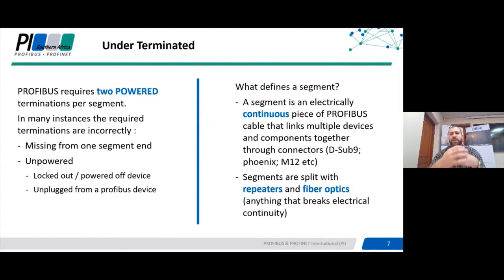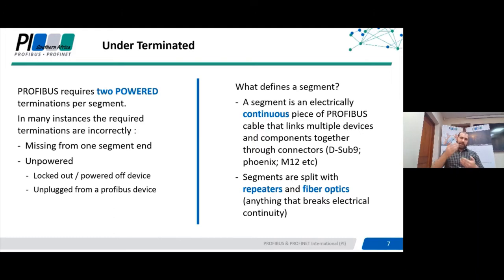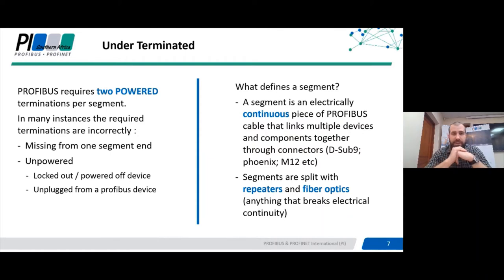One of the most common faults for Profibus DP installations is referred to as under-termination. To understand this, we first need to understand what termination is. A termination is simply a set of resistors or a resistor circuit designed to capture excess energy from the bus once the telegram signal reaches the end of the line. All this energy traveling from a transmitting station will bounce back at the end of the cable and cause reflections, which can interfere with future communications.